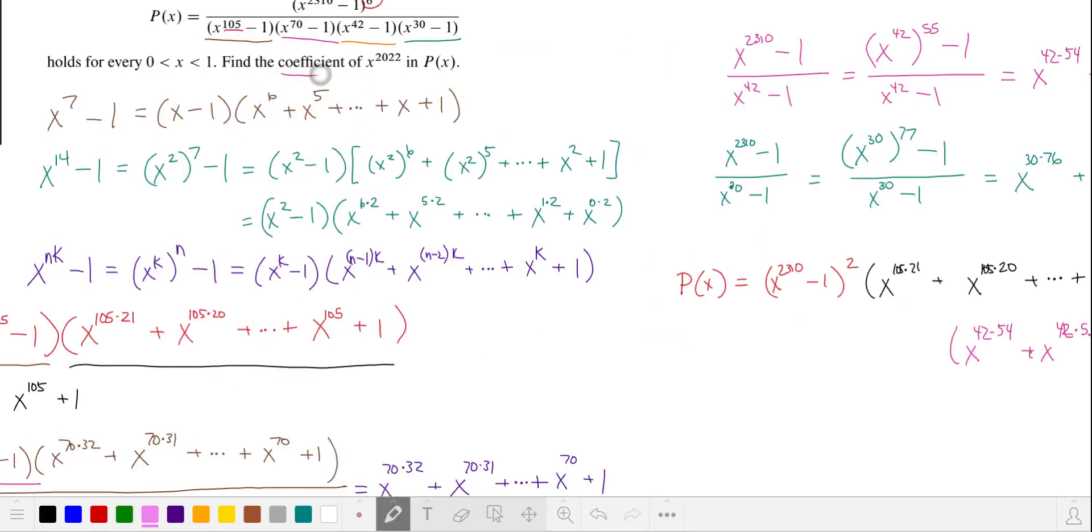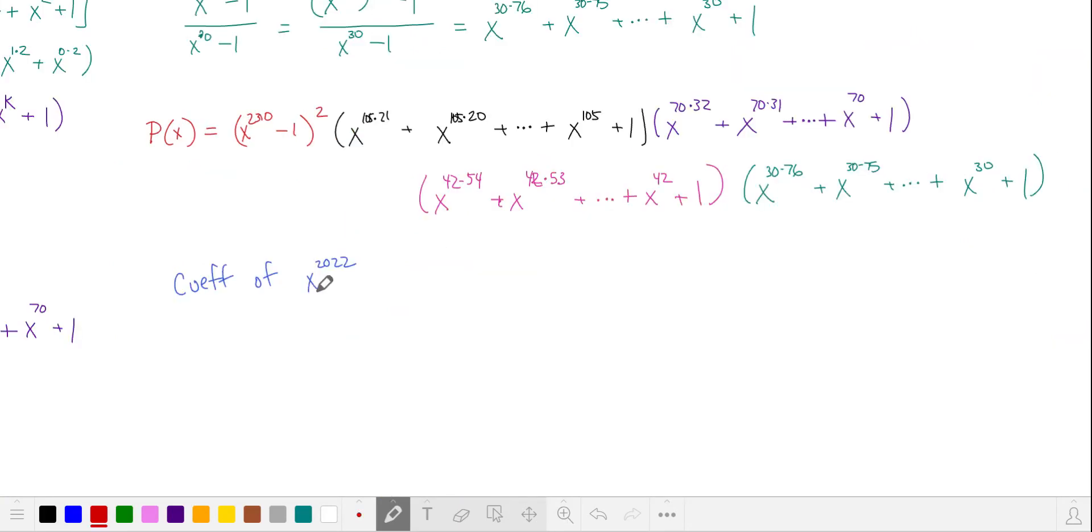The problem asks for the coefficient of x to the power of 2022. We're going to create this power of x by combining the powers of x in these six remaining factors. The power of x in our first two factors is too big, so we're going to choose the negative one from the first two factors.